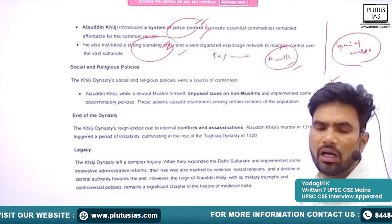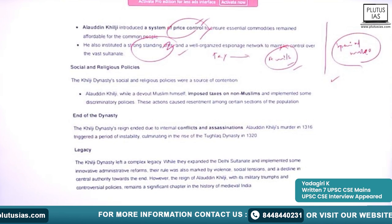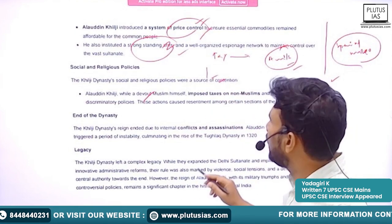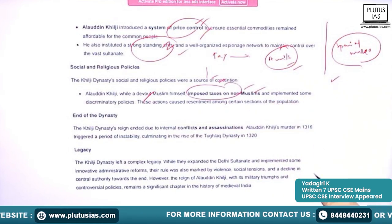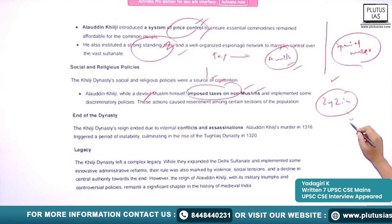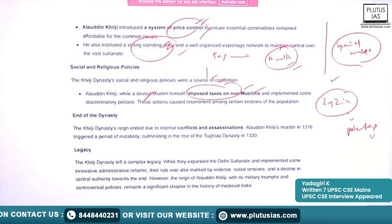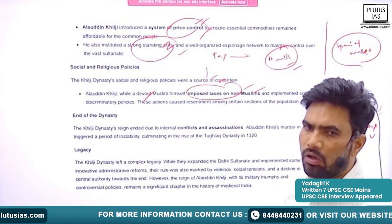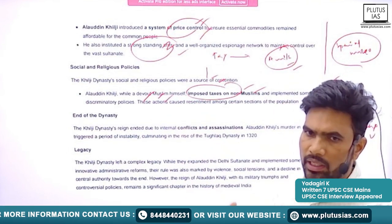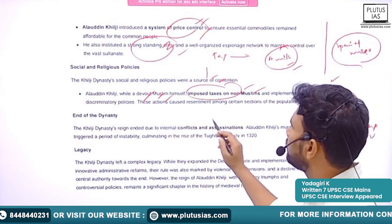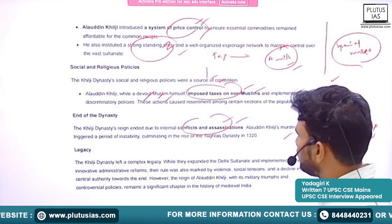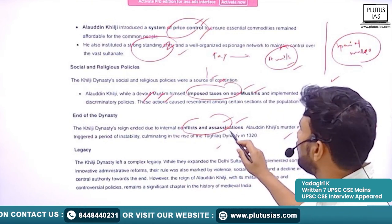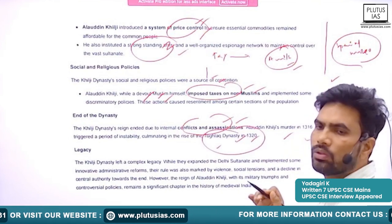He also instituted a strong standing army. His social and religious policies are somewhat controversial — he imposed tax on non-Muslims, known as the Jizya tax, also called the poll tax. He is not well known for religious tolerance; his measures were somewhat discriminatory. The dynasty ended because of conflicts and assassinations. Alauddin himself was murdered in 1316. This triggered a period of instability and subsequently the dynasty was ended by the Tughlaq Dynasty.